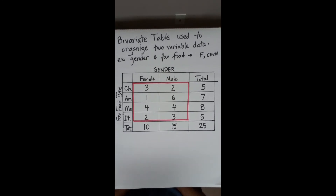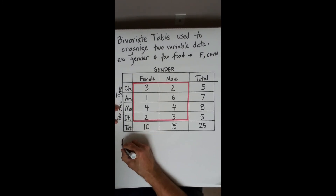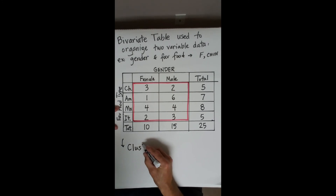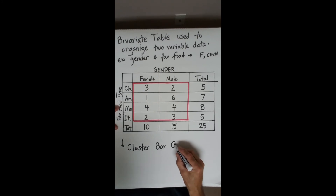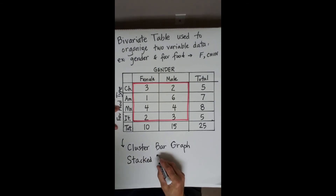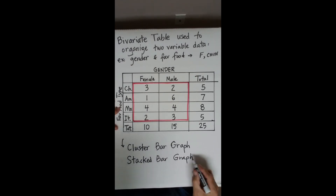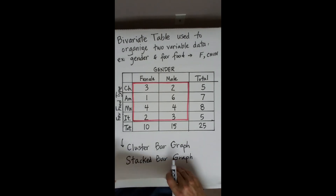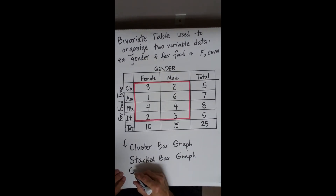There are a couple of graphs we draw from this table. From this table we're going to draw what your book calls a clustered bar graph and a stacked bar graph. You could also go back and draw a compound line graph with this same information.